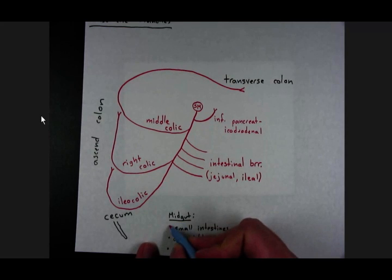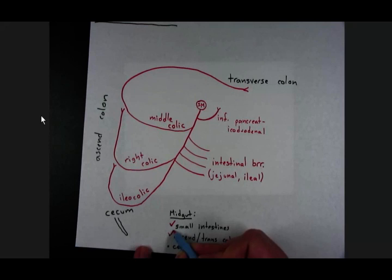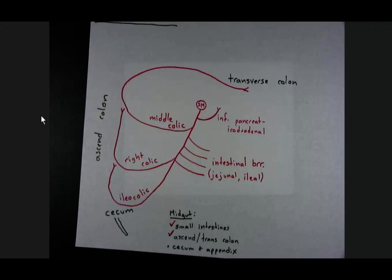Small intestines. Got that. In terms of intestinal branches. Ascending and transverse colon. Got that. Cecum and appendix. Got that.